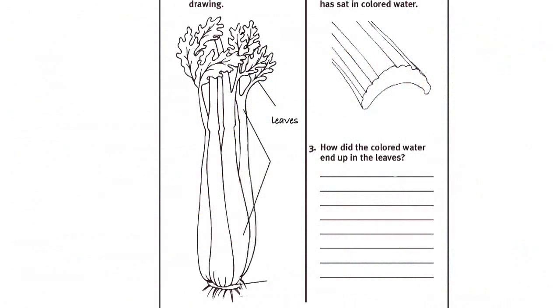Distribute a copy of Activity Sheet 7 to each student and two boxes of crayons to each team. Tell students to label and color in the drawing of the celery on the left-hand side of the sheet.